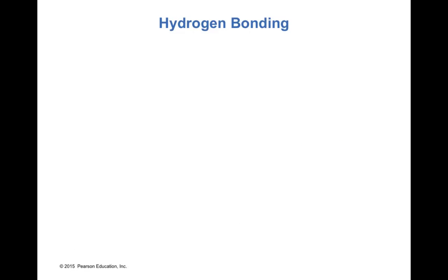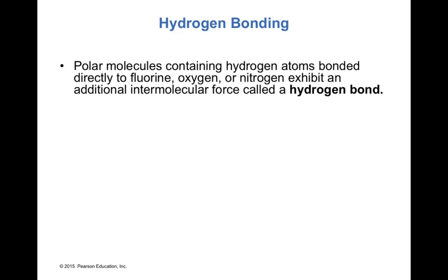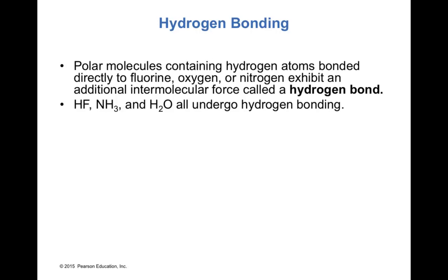Now let's discuss hydrogen bonding. Polar molecules containing hydrogen atoms bonded directly to fluorine, oxygen, or nitrogen exhibit an additional intermolecular force called a hydrogen bond. HF, NH₃, and H₂O all undergo hydrogen bonding. These molecules have dispersion forces and dipole-dipole forces, but also hydrogen bonds — so they have three types of intermolecular forces.